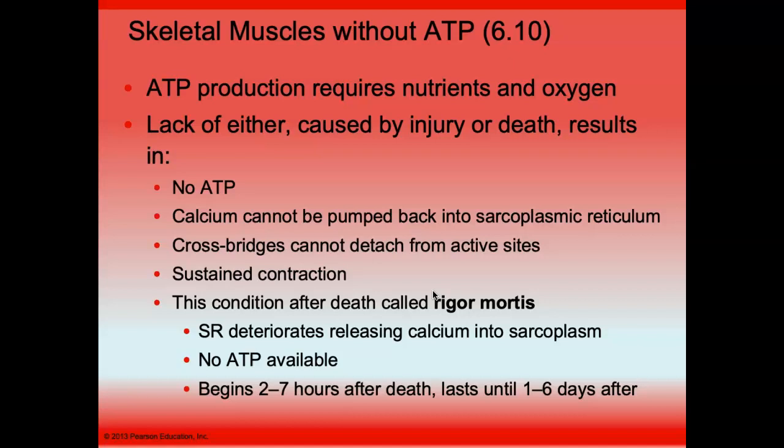ATP production requires nutrients, oxygen, and life. Once you die, you stop making ATP. However, there is still ATP in your cells, cross bridges form, and the muscles contract after death — this is called rigor mortis.